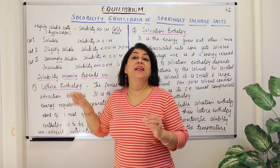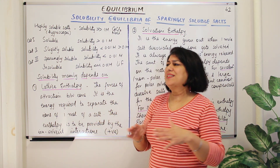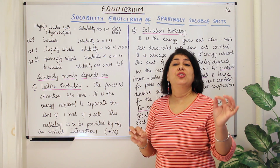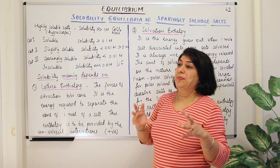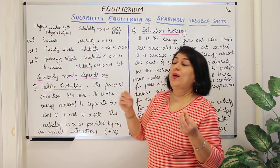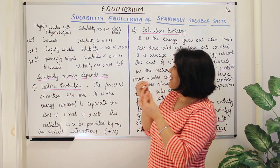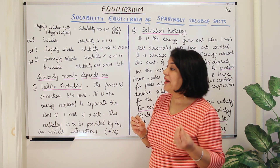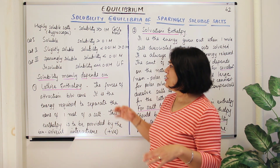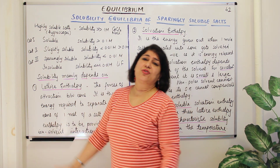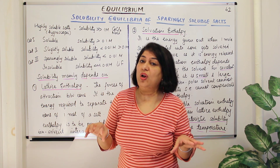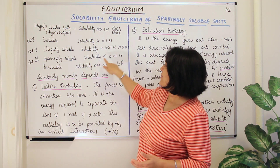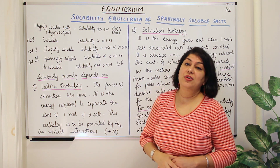The third category is sparingly soluble salts. Sparingly soluble means they are hardly soluble — they barely dissolve. They have a solubility of less than 0.01 moles per liter, which is a very very small molarity. Salts which do not allow even that much to dissolve are known as insoluble salts, where the solubility is much much lesser than even 0.01 molar.